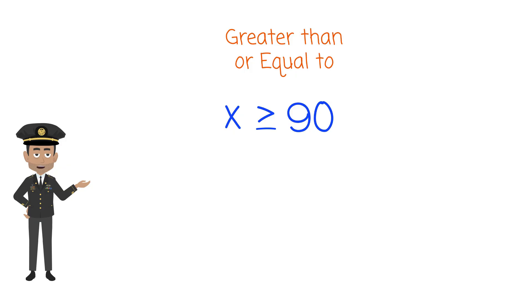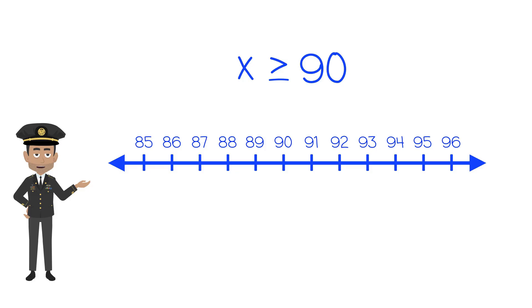This one is set at greater than or equal to 90. Because of the equal to symbol, 90 is included in the possible solutions. And to graph that on a number line, we use a solid circle to show that 90 is also included.